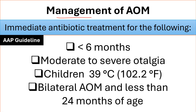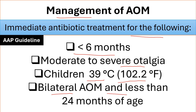Management of acute otitis media: immediate antibiotic treatment is indicated for children less than 6 months of age, moderate to severe otalgia, temperature 39°C (102.2°F) or more, and bilateral acute otitis media in children less than 24 months of age.